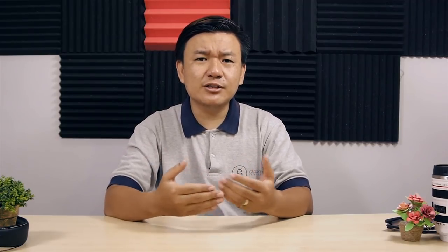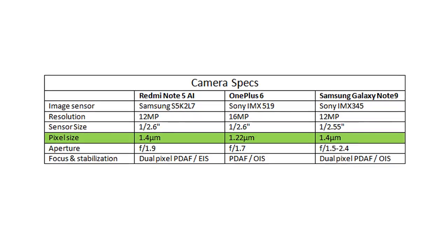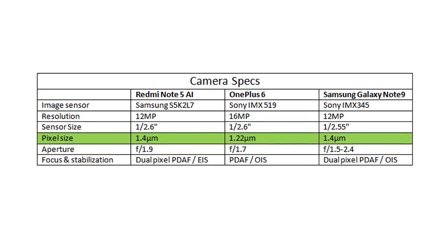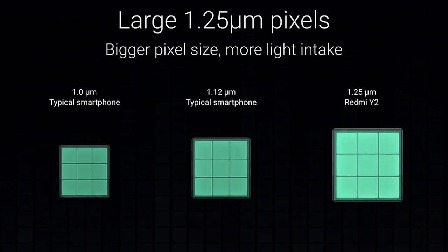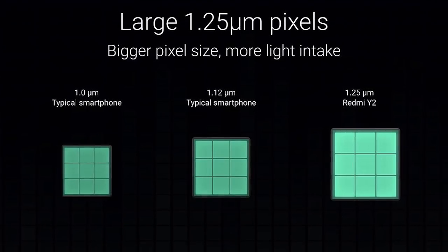Now let's talk about the third point, which is pixel size. The pixel size value is measured in microns — for example, 1.2 microns, 1.4 microns, or 1 micron. This value represents the pixel size, and a larger pixel size captures more light.